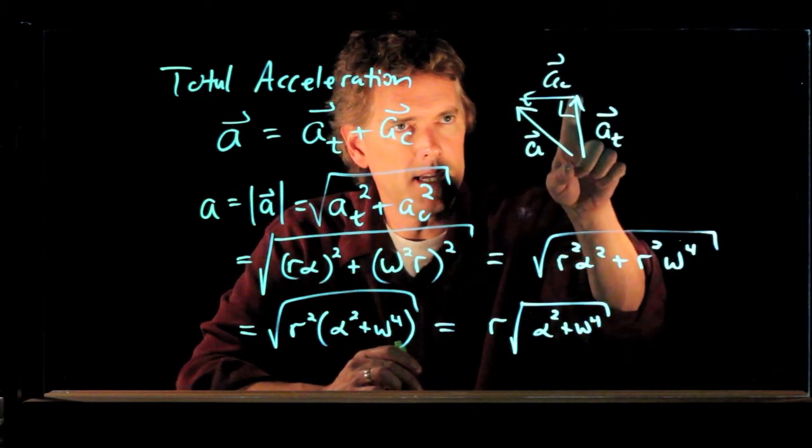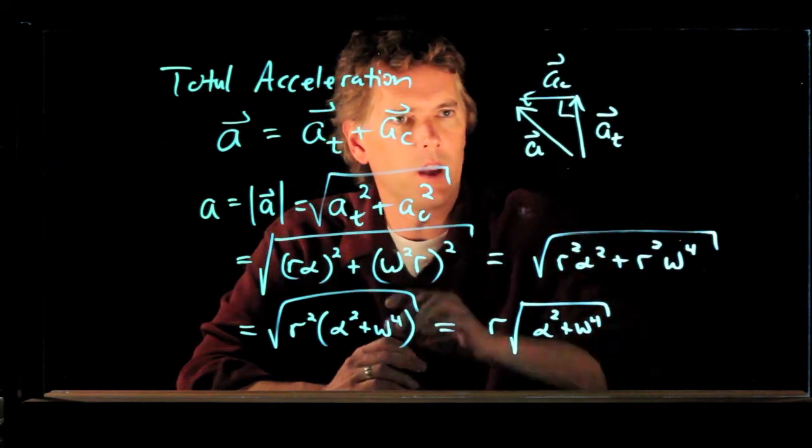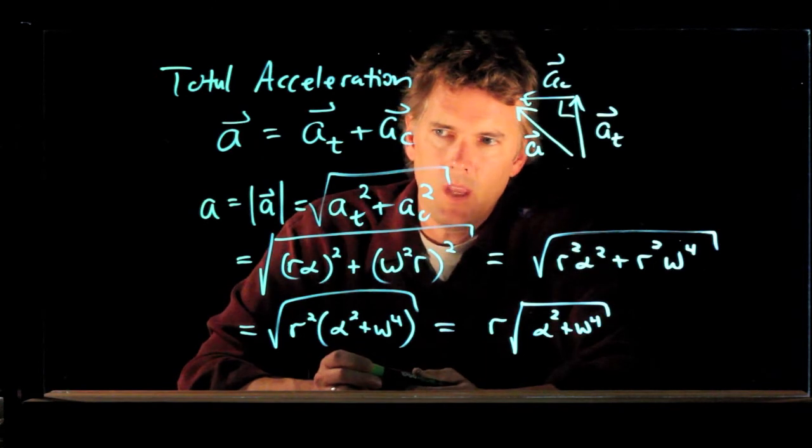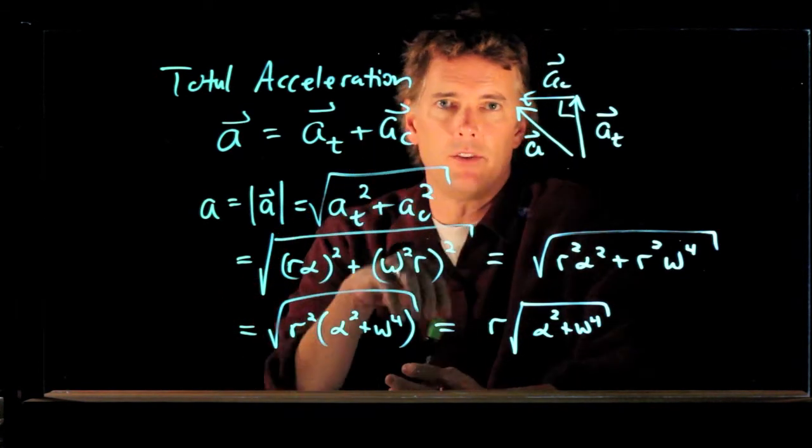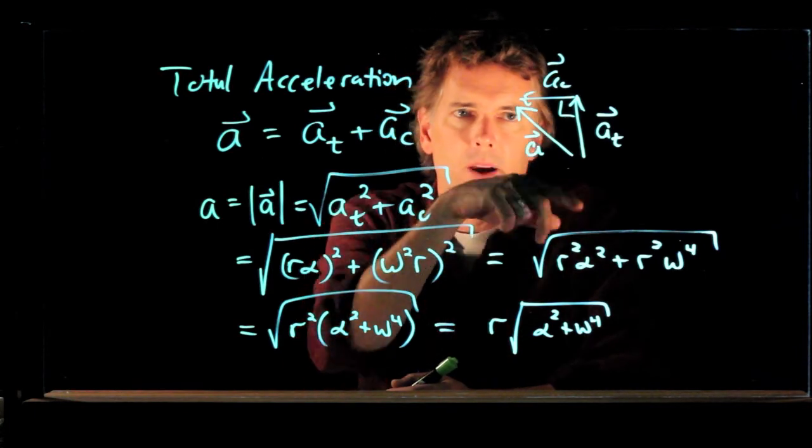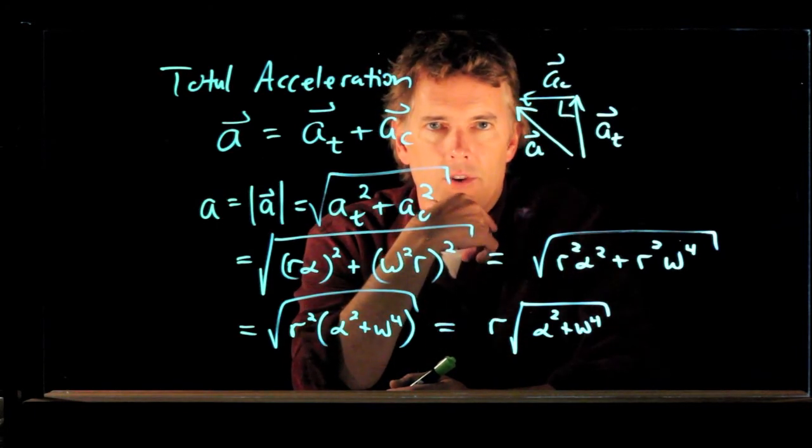When you add two vectors, you can move them around. You just have to maintain their orientation and their length. And so a t and a c are at right angles. We can complete the triangle here and get our vector a, which is our total acceleration. Now if you want to calculate the magnitude of that, it's just the sum of the squares square rooted. It's Pythagorean theorem for that triangle.